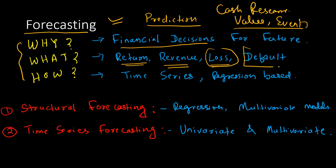Default is an event, so it is not a value. Return, revenue, and loss are values. Whereas default is an event. Similarly, delinquency is an event, payoff is an event — a collection event. If somebody is paying off the loan on time, that's also an event, and that also needs forecasting.